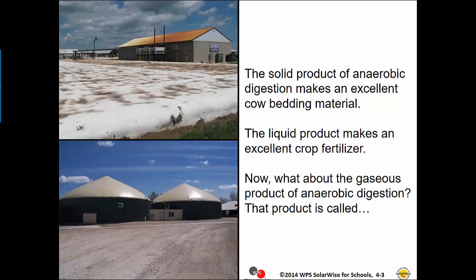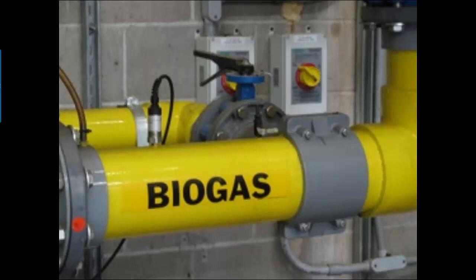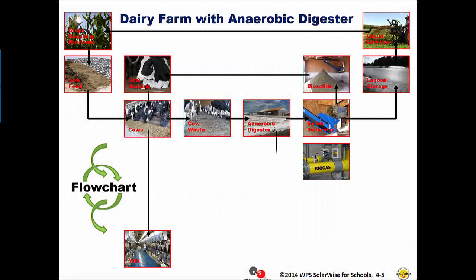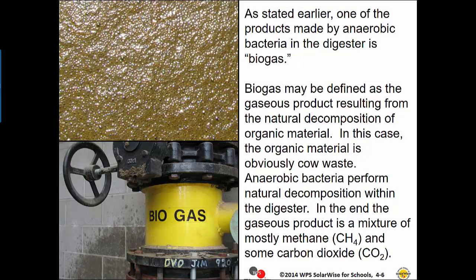That product is called biogas. One of the products made by anaerobic bacteria in the digester is biogas. Biogas may be defined as the gaseous product resulting from the natural decomposition of organic material. In this case, the organic material is obviously cow waste. Anaerobic bacteria perform natural decomposition within the digester. In the end, the gaseous product is a mixture of mostly methane and some carbon dioxide.